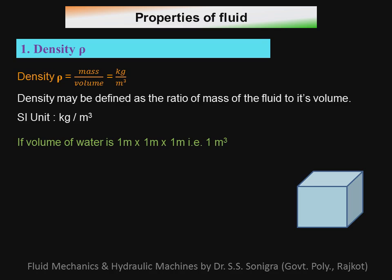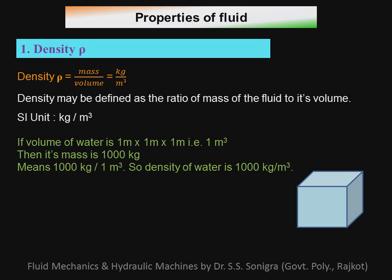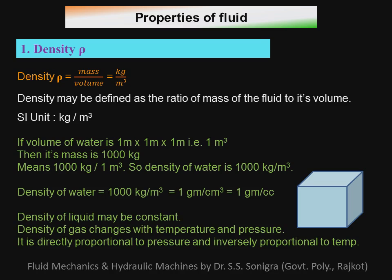The volume of this water tank is 1 meter cube. So its mass is 1000 kilogram, meaning the density of water is 1000 kilogram per meter cube, or 1 gram per centimeter cube, or 1 gram per cc. If you take a 1 cm × 1 cm × 1 cm cube of water, its mass will be 1 gram.